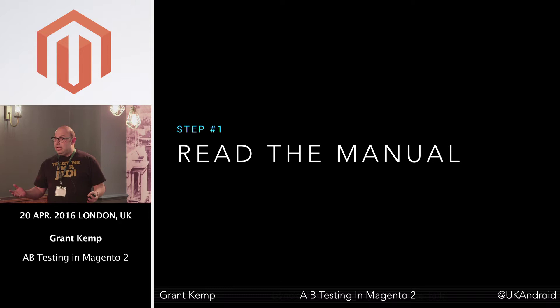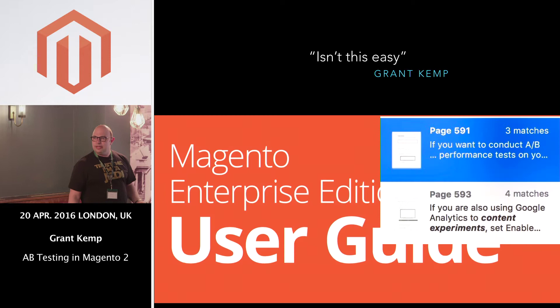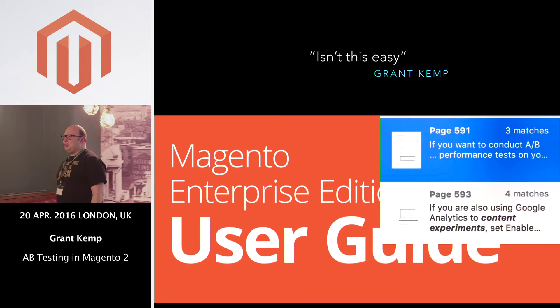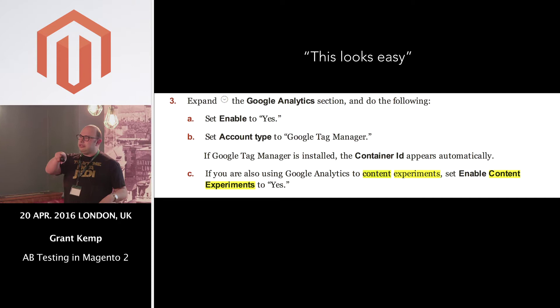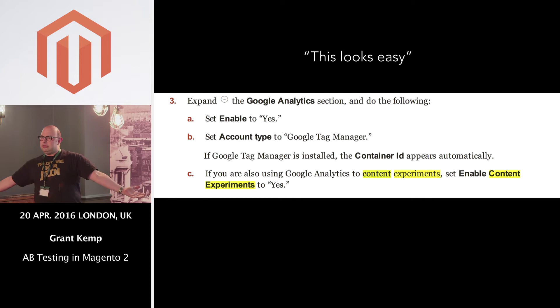So I thought, okay, I'll read the manual — that's the best way to find the solution, right? Do a search in the user guide, and we've got results. Job done. These are the instructions: you go into your configuration, go into sales, click on Google API, and tick the box that says 'enable content experiments.' That's it. Isn't that easy?